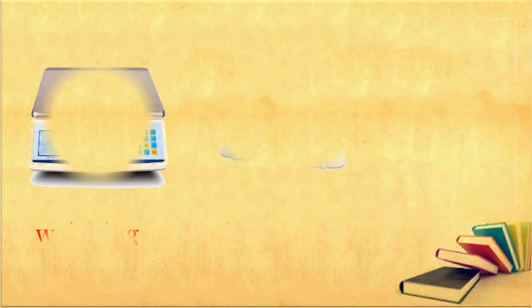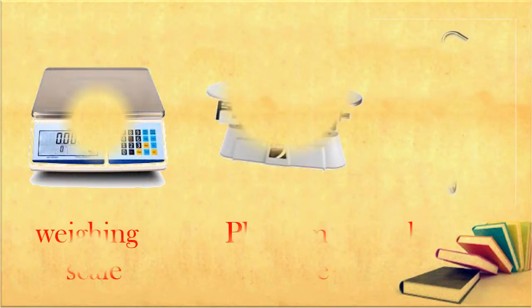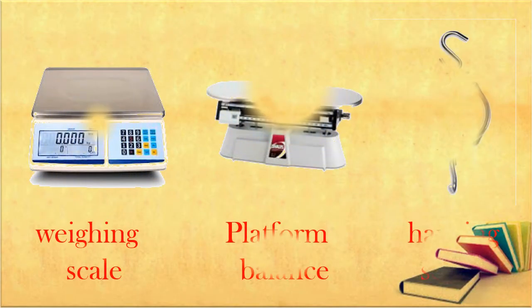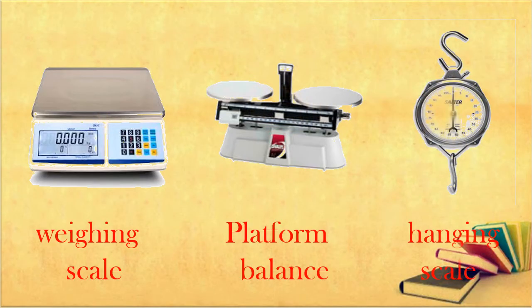These are the tools to measure the mass of an object: weighing scale, platform balance, and hanging scale. We usually find these balances in grocery stores, wet markets, clinics, hospitals, and commercial establishments.